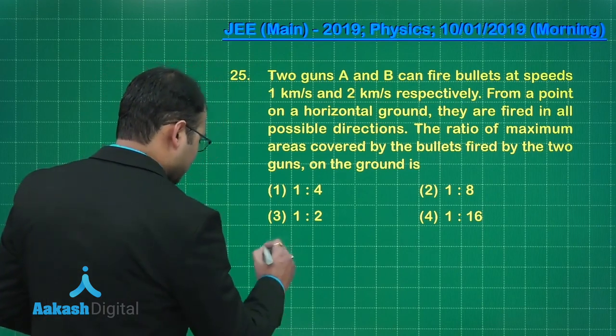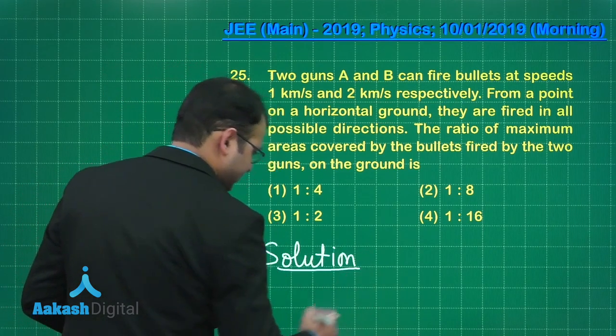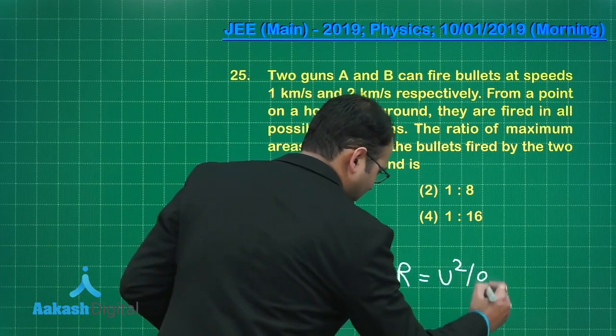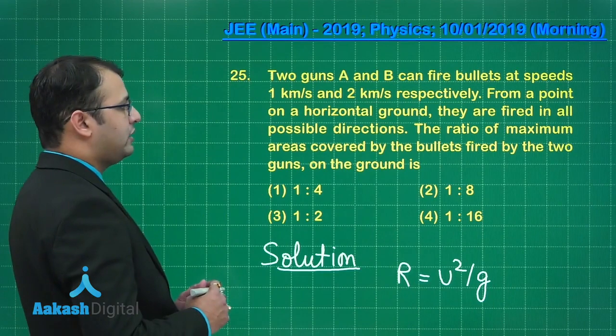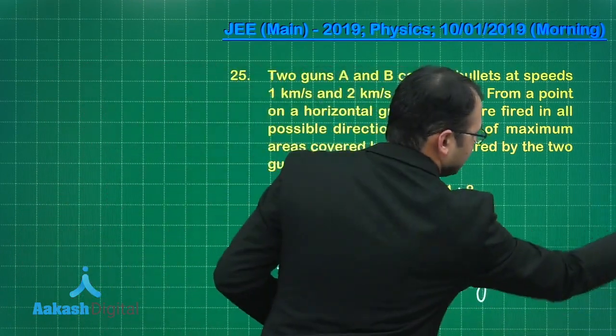For the case of projectile, maximum range would be given by u squared by g and we are well aware of this fact. So the ratio of maximum areas covered by the bullets, let's see.